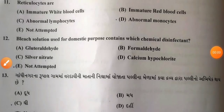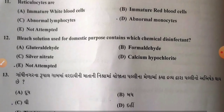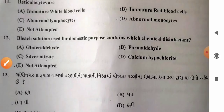Question 12: Bleach solution used for domestic purposes contains which chemical disinfectant? Options: A) glutaraldehyde, B) formaldehyde, C) silver nitrate, D) calcium hypochlorite. Calcium hypochlorite or sodium hypochlorite (CaOCl2 or NaOCl) is the main active ingredient of bleaching powder used for water treatment and as a disinfectant. So option D, calcium hypochlorite, is the correct answer.